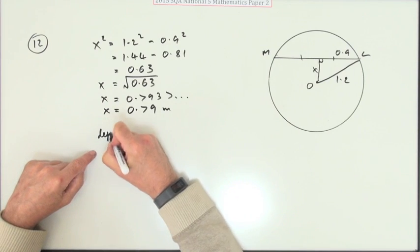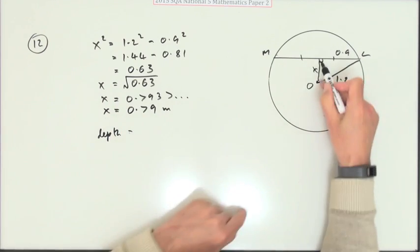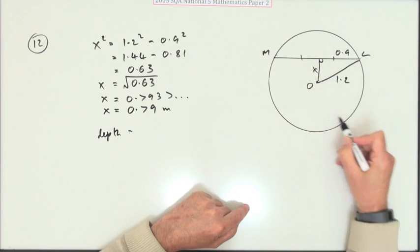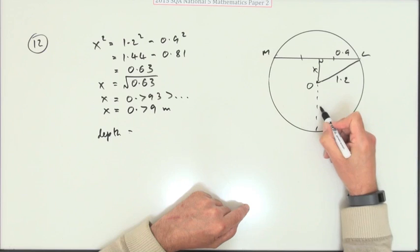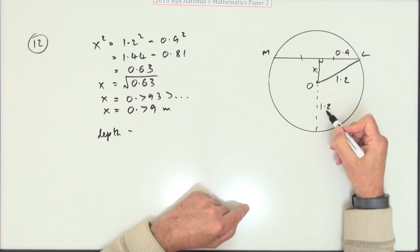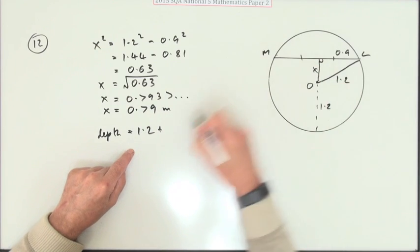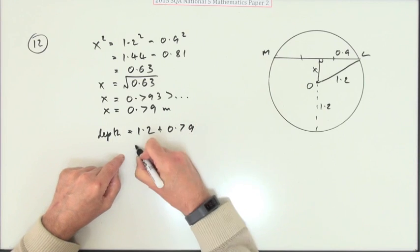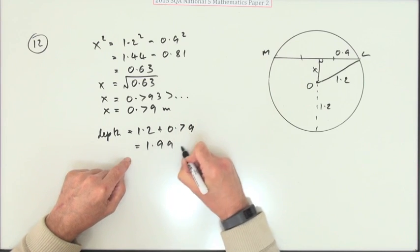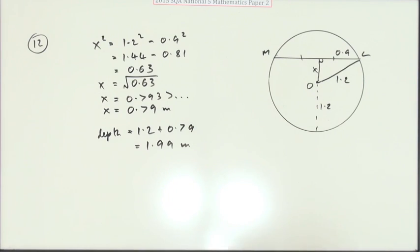So the depth of the milk then will be: if that's 0.79 and this part here is the radius, that's 1.2, it'll be 1.2 plus the 0.79 - that's 1.99 meters. It was almost there, it was almost at two, but it wasn't. But you don't really care if you're getting these four marks.